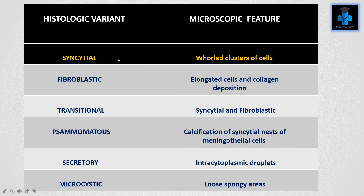There are 6 most common histological variations based on microscopic appearance. The first is syncytial, where cells will be in a whorl cluster or clumped together. Next is the fibroblastic variant, with elongated cells and collagen deposition. Next is the transitional variant, which is a combination of both syncytial and fibroblastic. Next is psammomatous, where calcification of syncytial nests of meningothelial cells is observed.